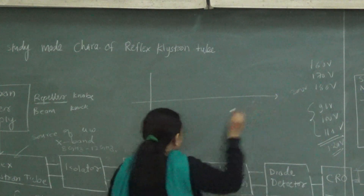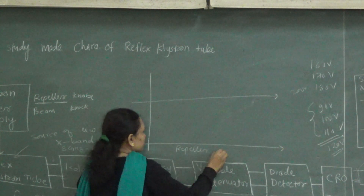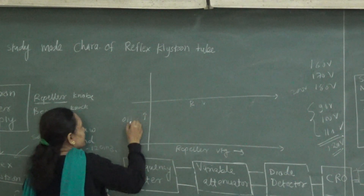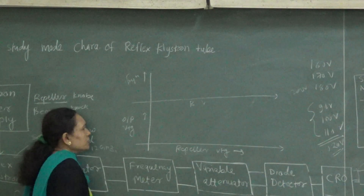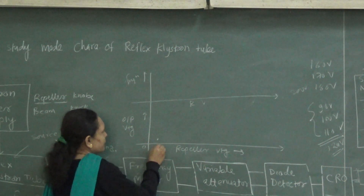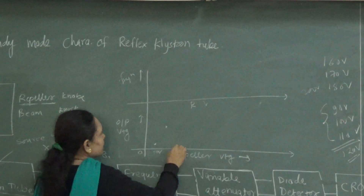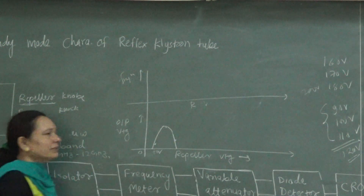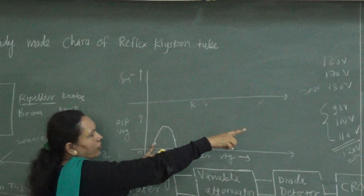If you draw the corresponding graph — the mode characteristics — with repeller voltage on the horizontal axis and output voltage on the vertical axis, you will see that as you increase from 50 to 70 volts the output increases and then falls, forming a mode. Joining those points gives you a dome-shaped curve. For the frequency characteristics, with repeller voltage on the horizontal axis and frequency on the vertical axis, you drop down the frequency values corresponding to each repeller voltage. Joining these points gives the frequency characteristics curve.